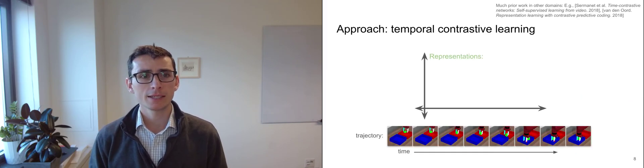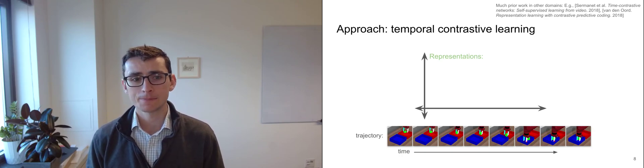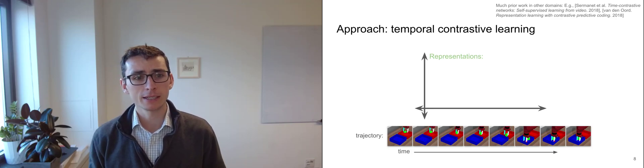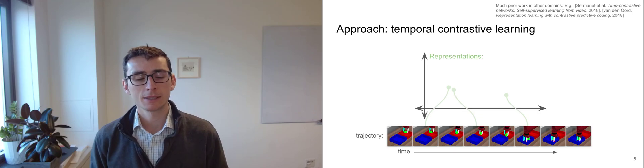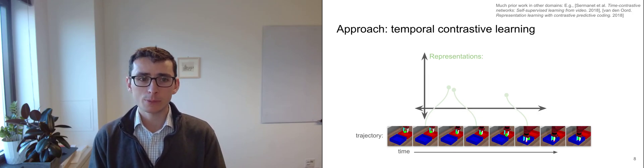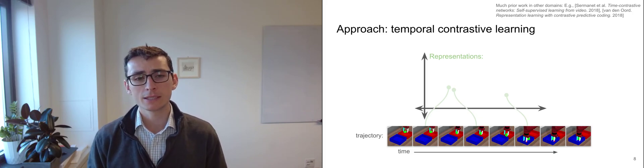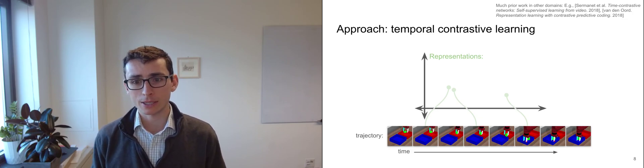The key approach that we analyze is temporal contrastive learning, an approach that's been pioneered in other fields. This approach works as follows. You start by taking time series data and embedding your data points in some representation space, such that data points that occur nearby in time are given nearby representations. Importantly, these contrastive learning methods don't require reconstruction. That makes them a lot easier to apply to high dimensional data.